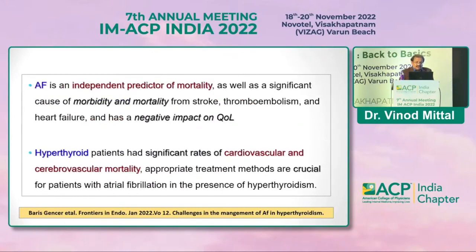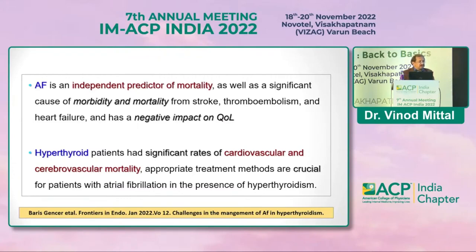Atrial fibrillation is an independent predictor of future morbidity and mortality and has a negative impact on quality of life. It is associated with thromboembolism, cardiovascular and cerebrovascular mortality, especially in the elderly. It is crucial to diagnose and address AF, especially when hyperthyroidism — including subclinical hyperthyroidism — is present, which we tend to miss on testing.